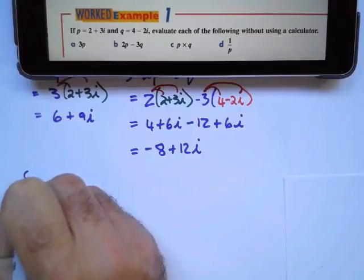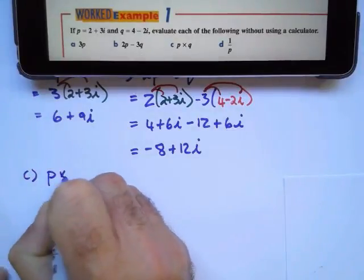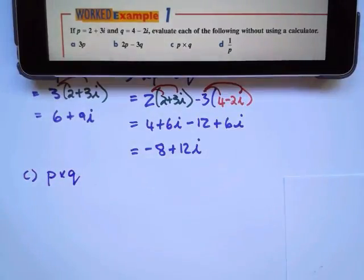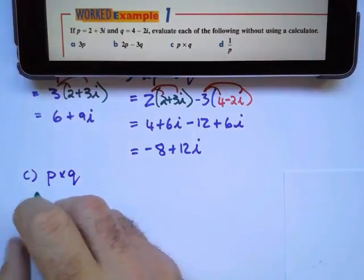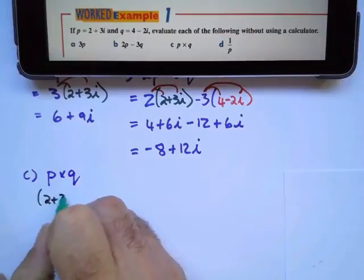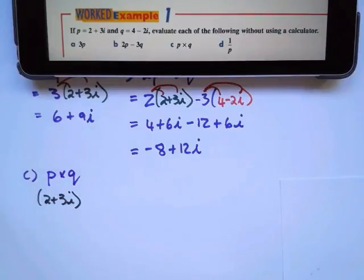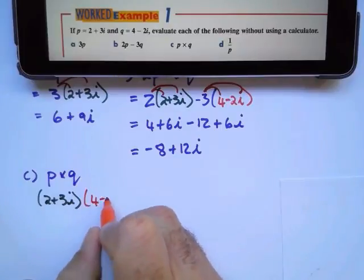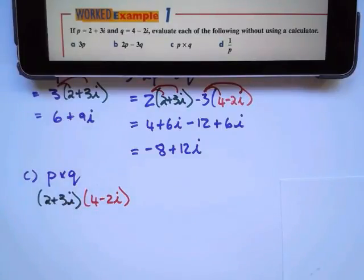With part c, they ask us to multiply p by q. So I'm going to substitute. p is 2 plus 3i, multiply by q. q is 4 take away 2i.